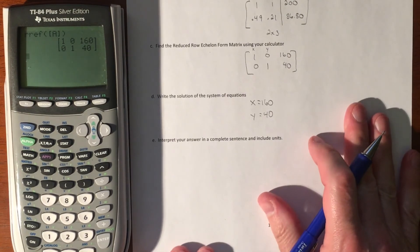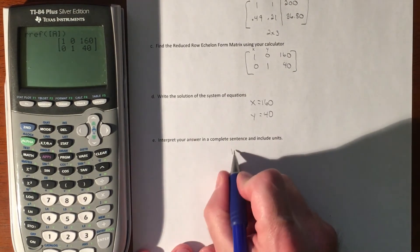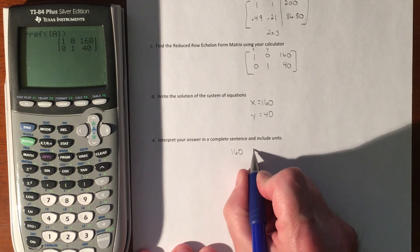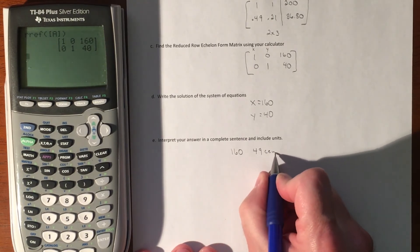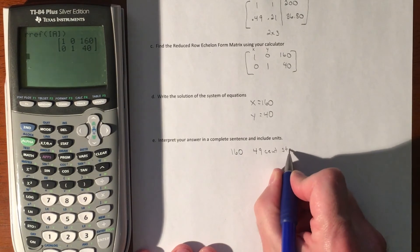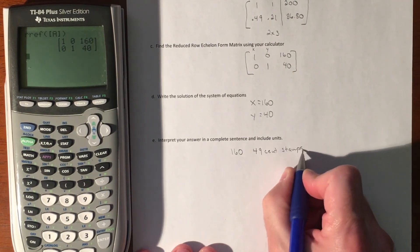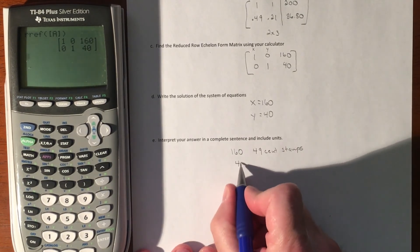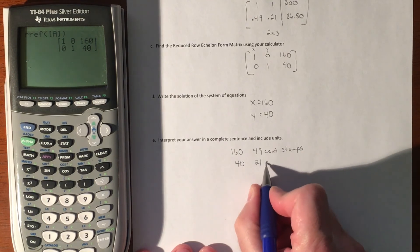That means you have 160 49-cent stamps and 40 21-cent stamps.